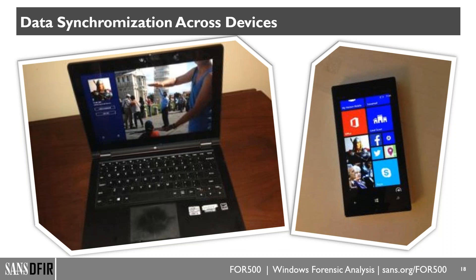Skype is another good example — if you're Skyping on your smartphone, that history is also synchronized to your laptop or any other system you've ever logged into with the same Skype account. In FOR500 we're now recognizing which applications we're forensicating have synchronized data from application A on device A to the same application on device B. How do we know which device was used to originate that data? And what happens when that data is deleted on one device — is it force-deleted across all devices?